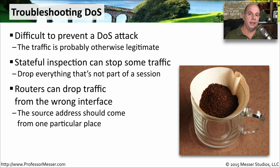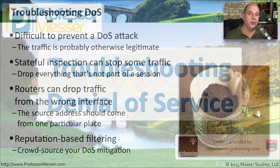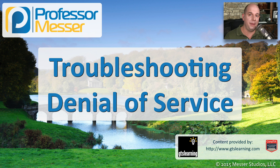With this method, the router or firewall looks at the source address and compares that to the interface that it was received on. If it's not coming inbound on the correct interface, it drops all of the traffic. In some cases, you may also be able to take advantage of reputation-based filtering, where a large number of users around the world can differentiate between what devices may be good and what devices may be bad.